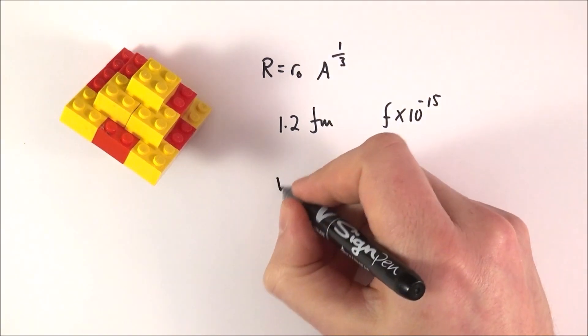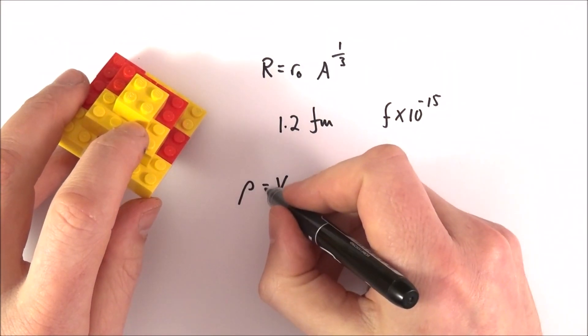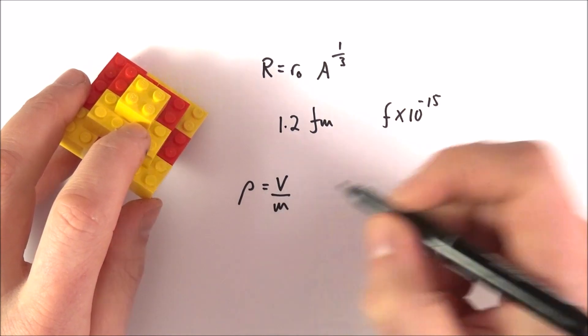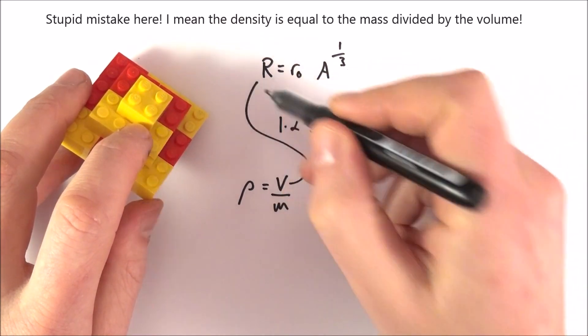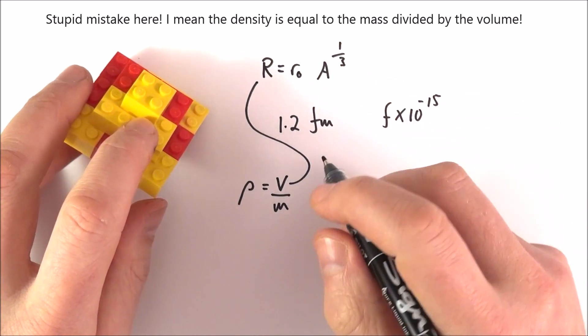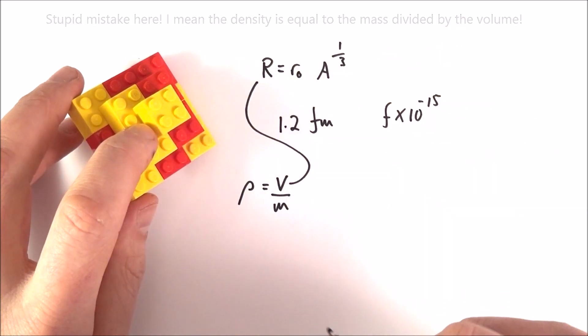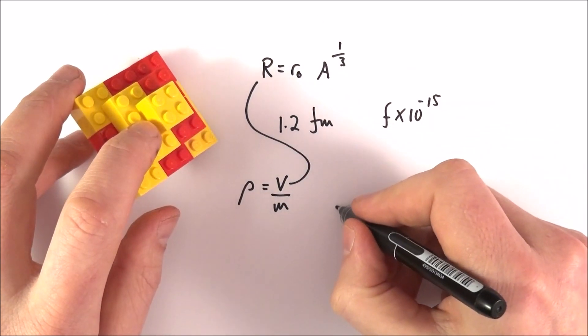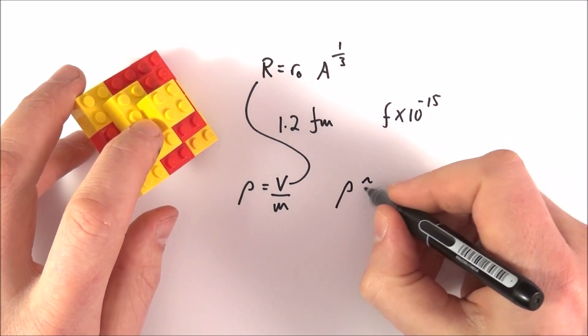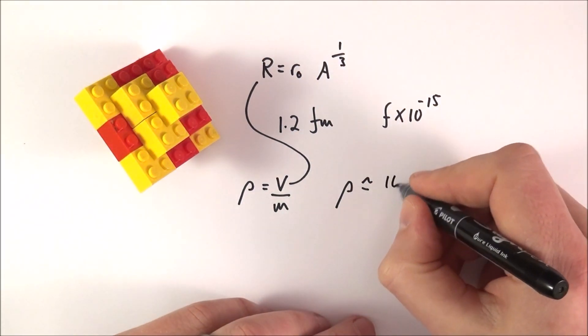Therefore, we can look at the density, which is equal to the volume per unit mass. We can work out the volume from this equation, and we can calculate the mass—we know the total number of nucleons and the mass per nucleon. This gives us the density, and the density of pretty much all the elements is approximately something times 10 to the 17 kilograms per cubic meter.